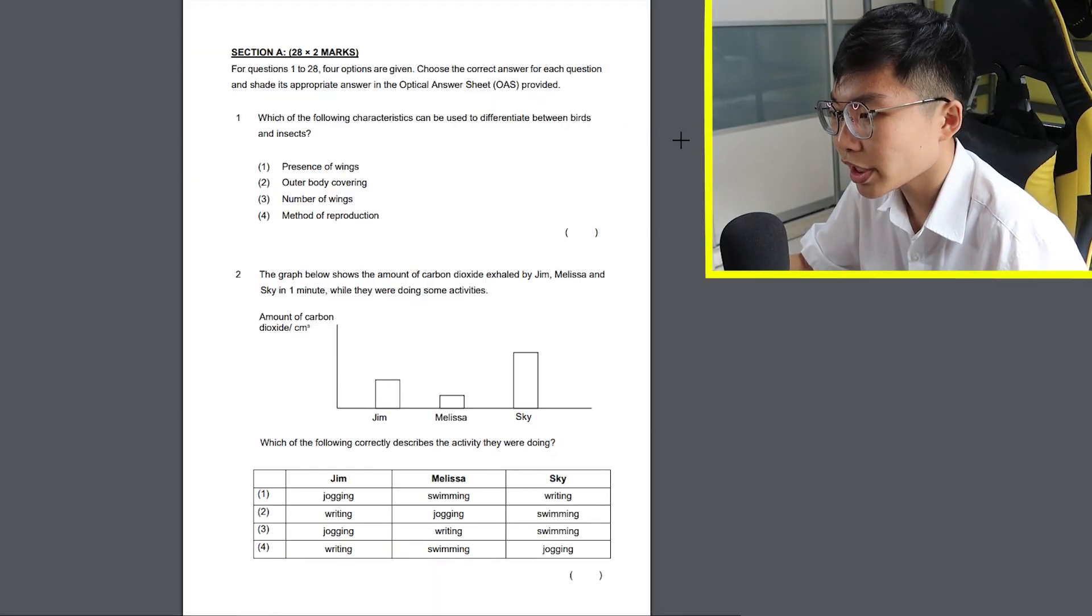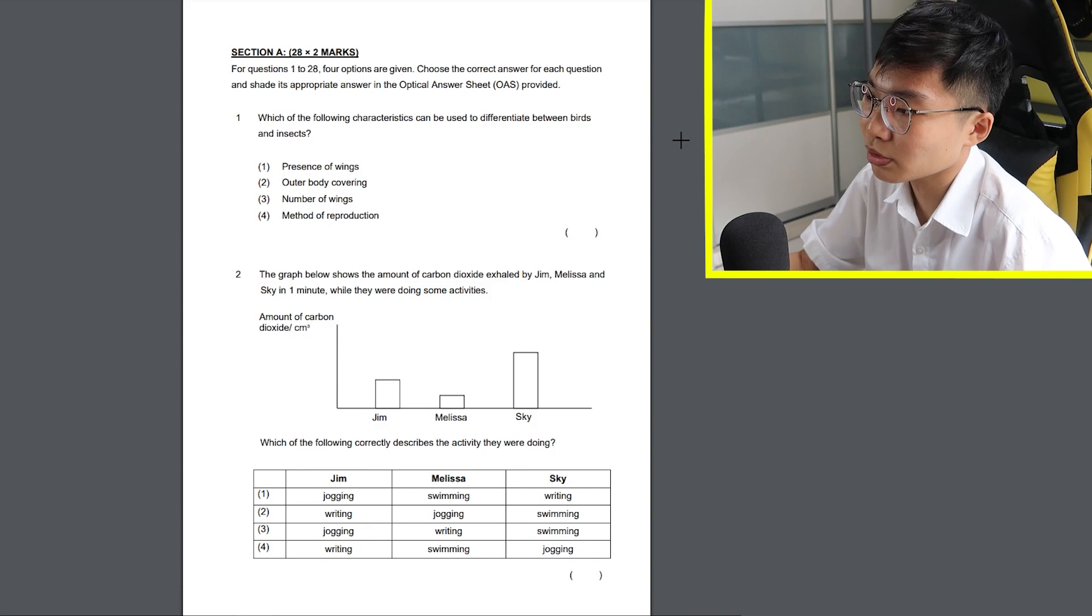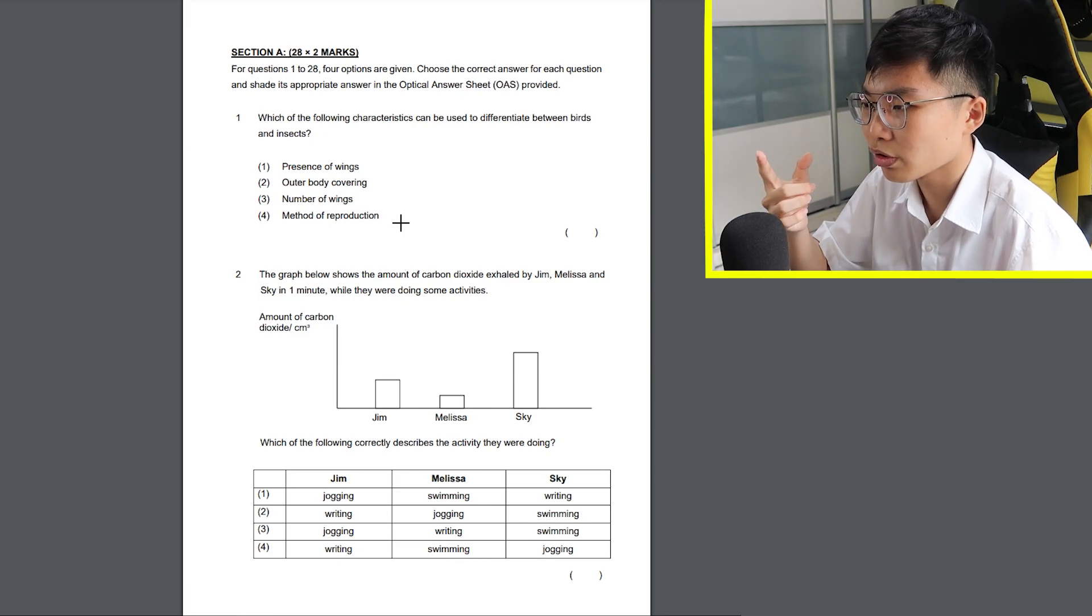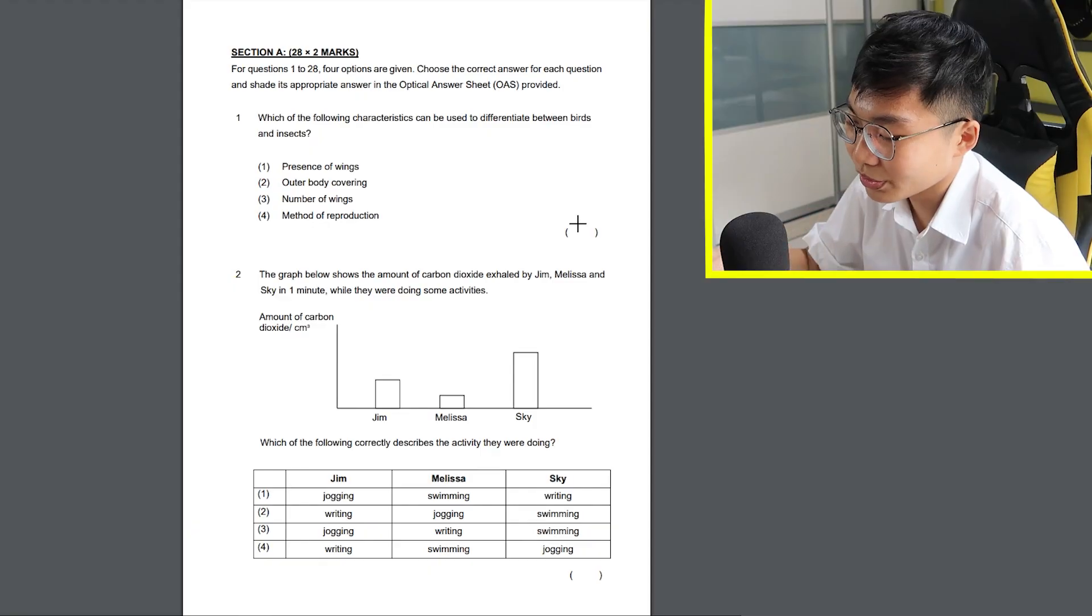Alright, question 1. Which of the following characteristics can be used to differentiate between birds and insects? Presence of wings, outer body covering, number of wings, or metamorphic production? It's between 2 and 4, but which one is it? No, it's number 2. Birds are soft and insects are hard, right?